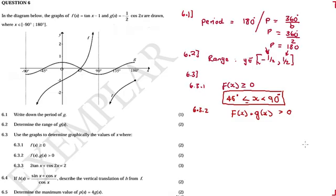Now 6.4: if h(x) is equal to a given expression and equals g, describe the vertical translation of h from f. Fear not — we just simplify. For function f there is no constant term. We simplify the expression so we can see what happened from f to h.